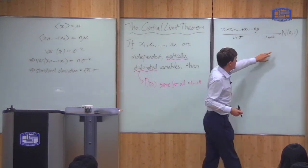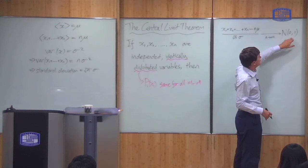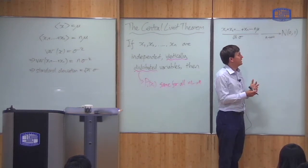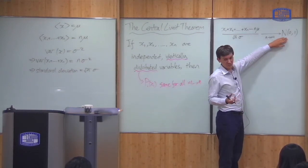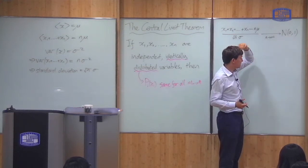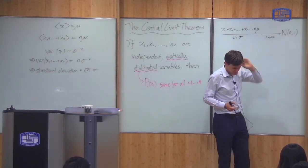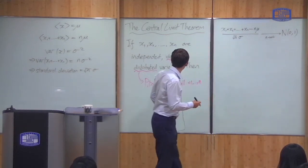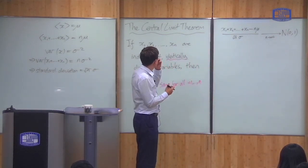So that explains why the mean is 0 and the standard deviation is 1. What I haven't explained, and what I will not explain, is why it becomes normally distributed. When I add lots of these variables together, why do you get a normal distribution? Well, that's hard to prove, so I'm not going to do it. I'll just state the result.